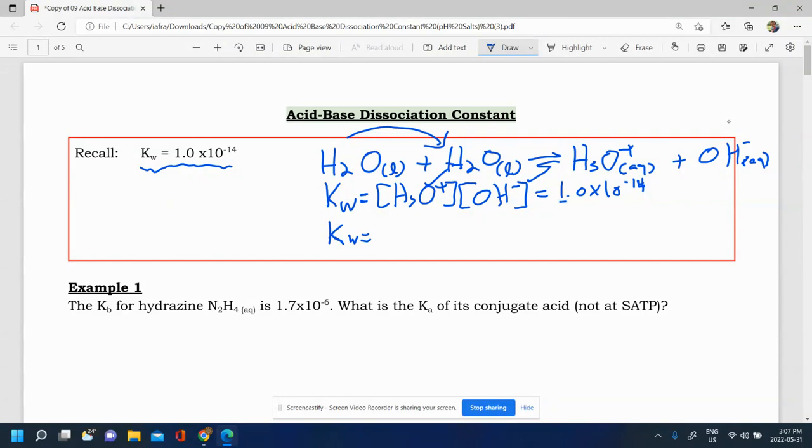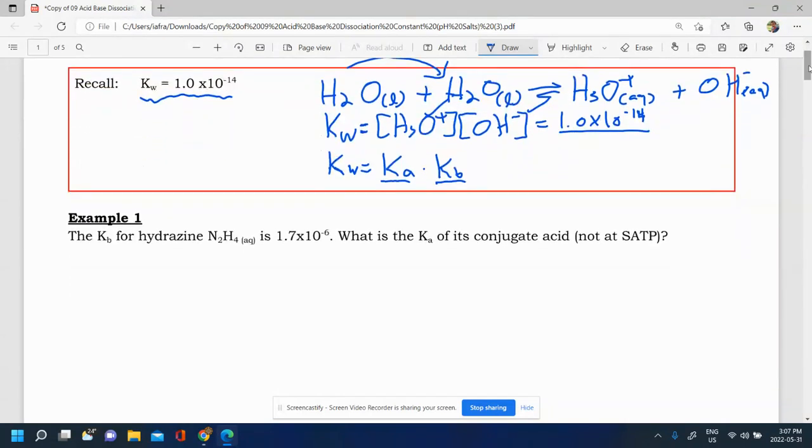The Kw, this number here, can actually be found by doing the Ka times the Kb for a weak acid and its conjugate base. And I want to show you how that's derived and why that relationship exists. The idea is that if you know the Ka, then you can figure out the Kb because you have Kw. So you could, for example, do that Kb is equal to Kw over Ka.